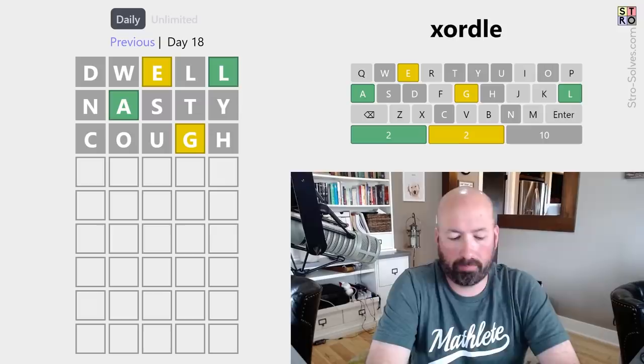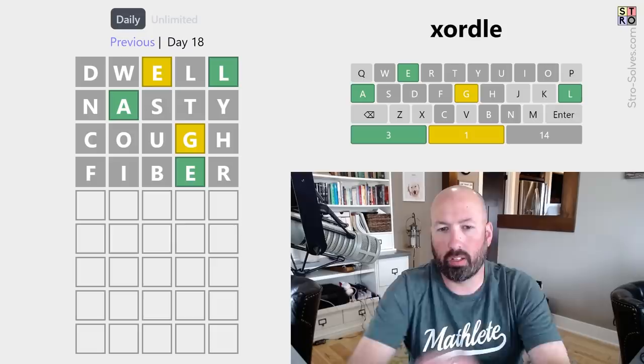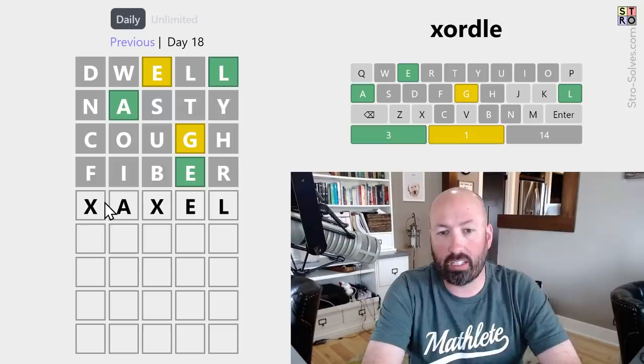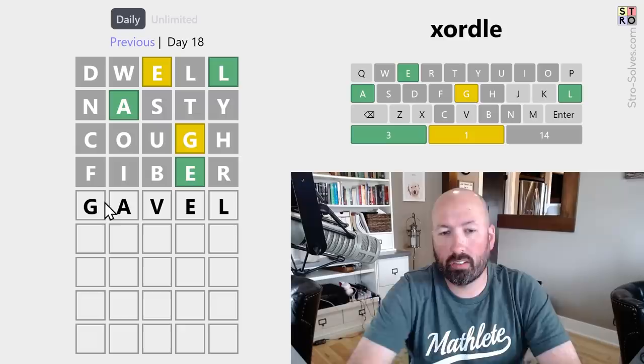All right. I think I'm going to do Fiber. F, I, B, and R are all new letters. Another spot for the E. We're going to do that. Oh, that's the right spot for the E. Okay, cool. So, I mean, it could be something A, something E, L. Gavel? Gavel would use the G, the A, the E, and the L.